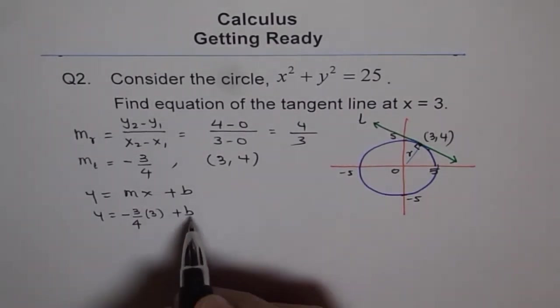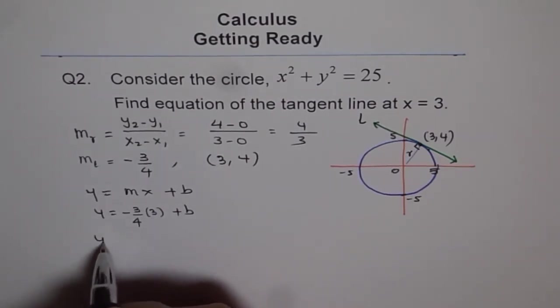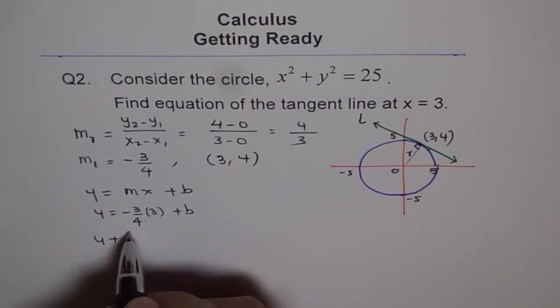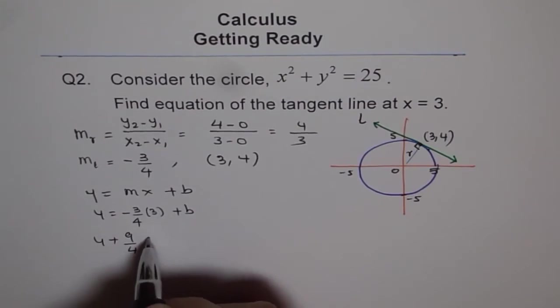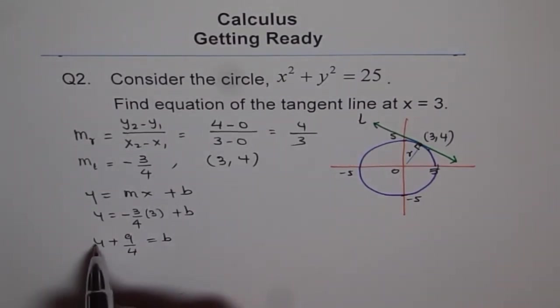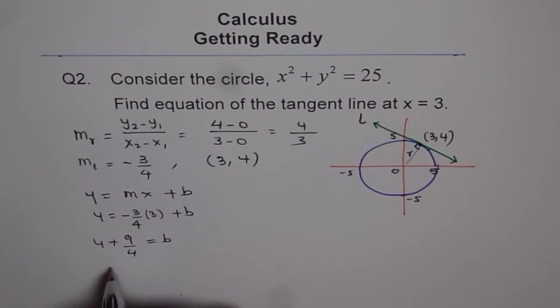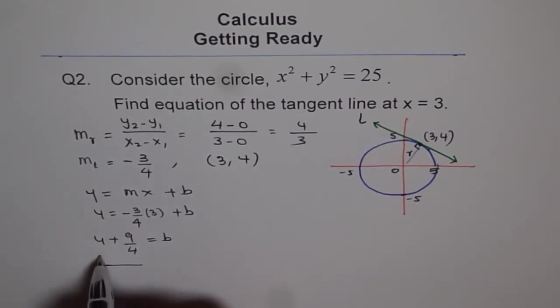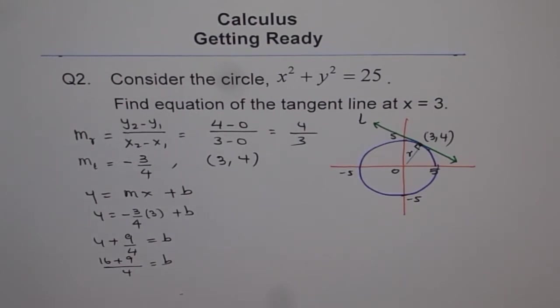Now we will solve. So B is equal to 4 + 9/4 is the value of B which is 4 × 4 is 16, or let me write 16 + 9 over 4 is the value of B. So that is the value of B which is 25/4.